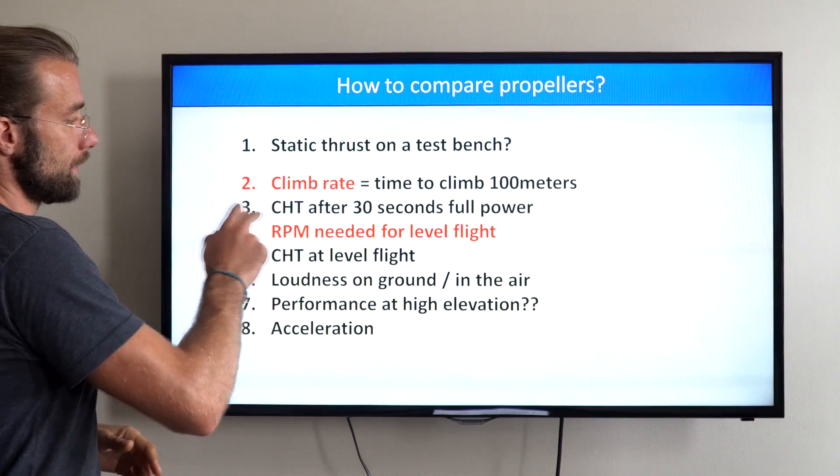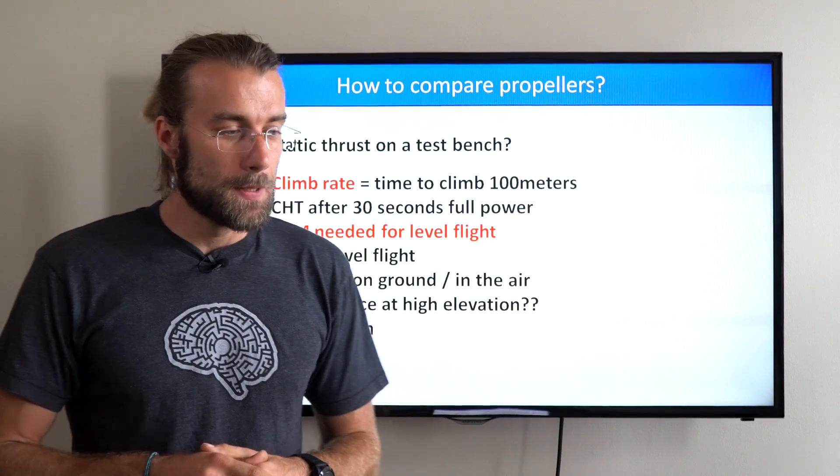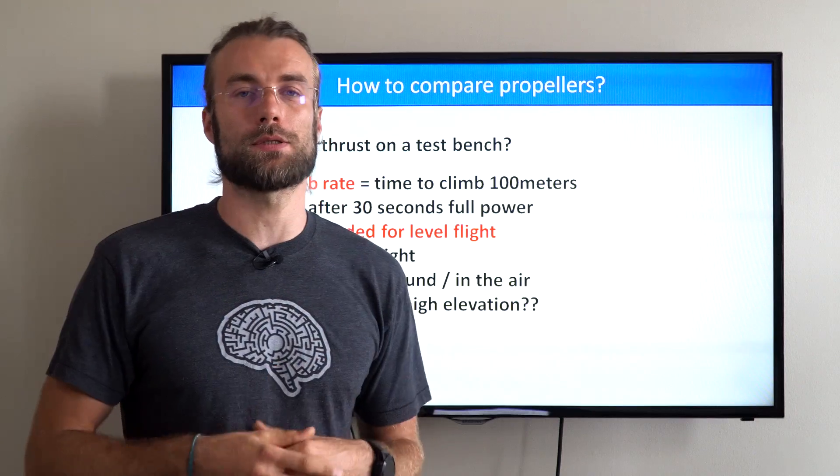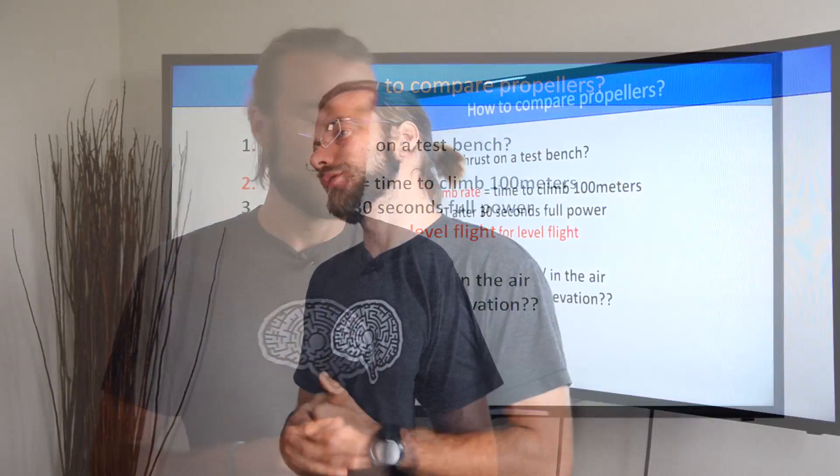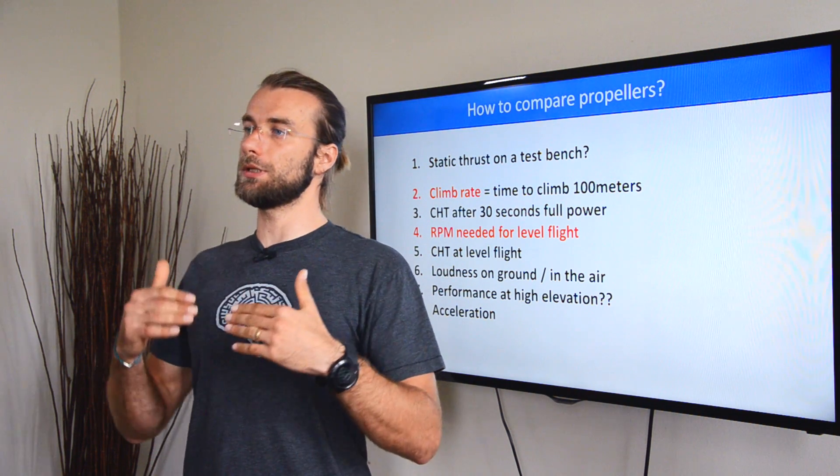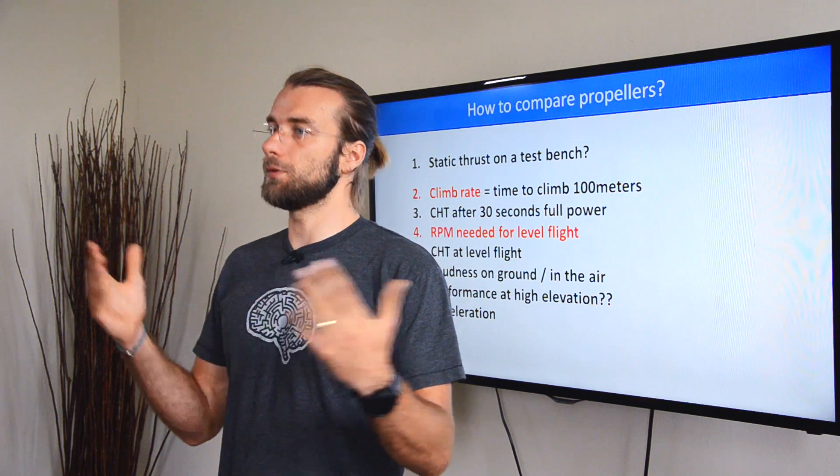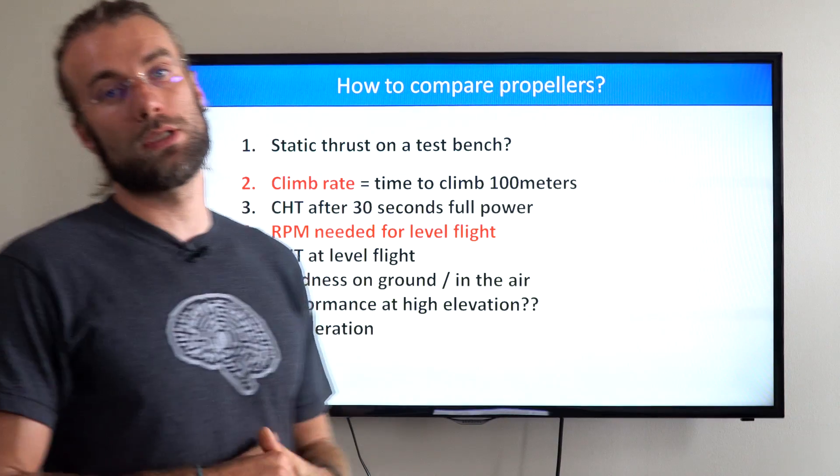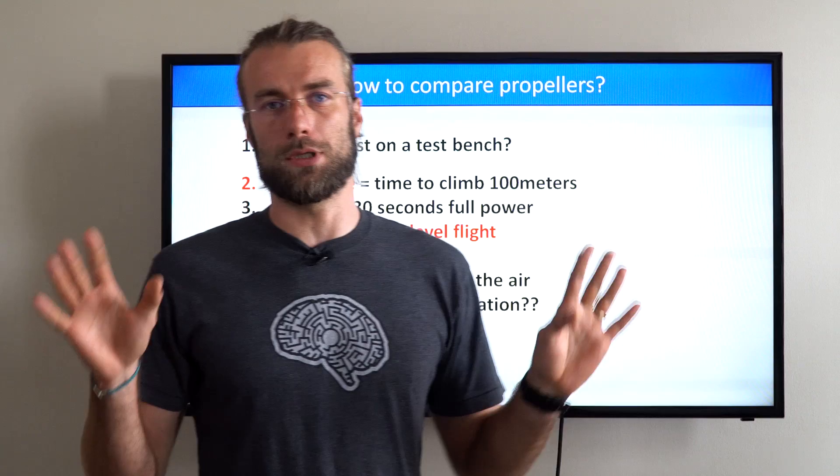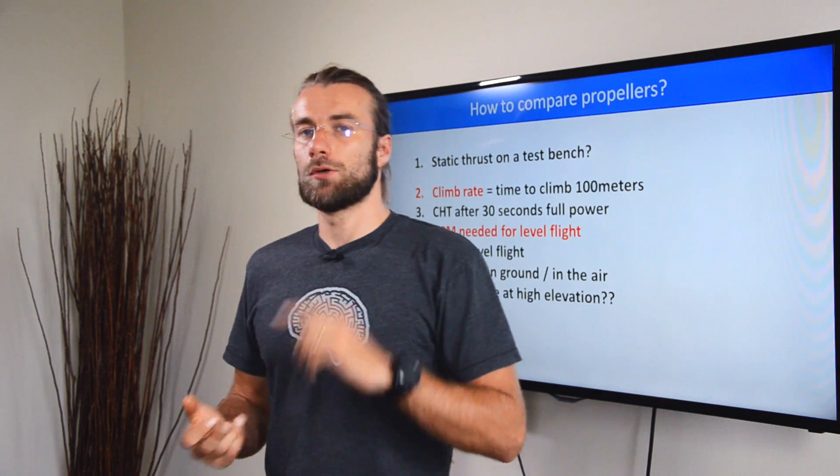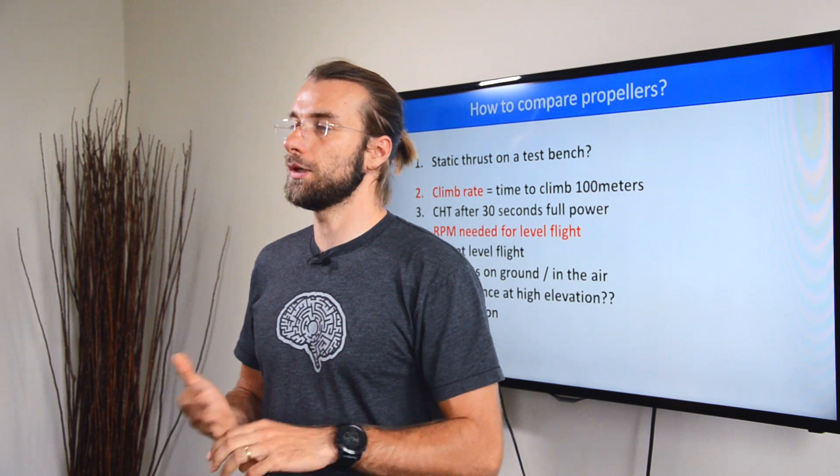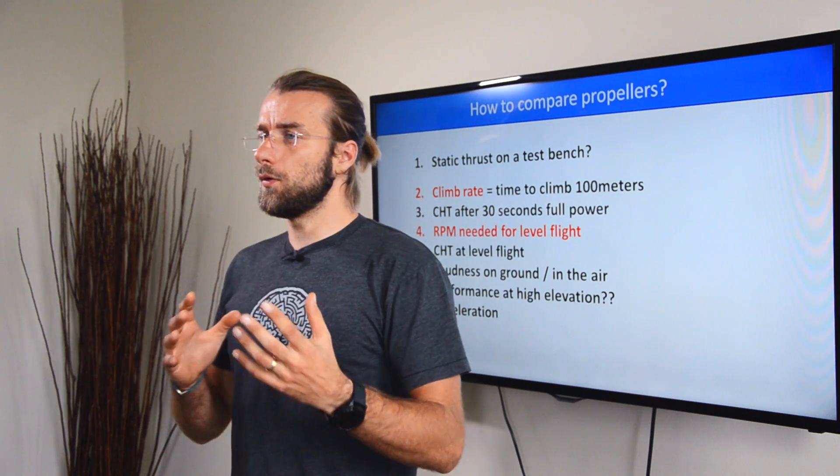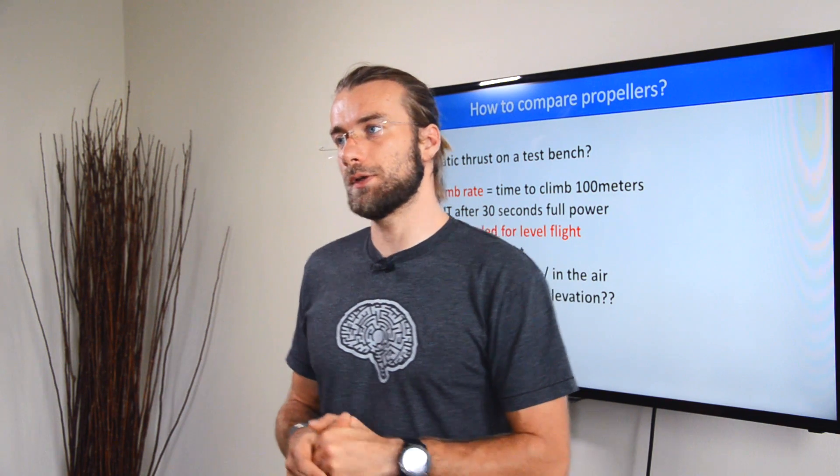The second thing that's crucial is the cylinder head temperature after a 30 second climb. Vittorazi Moster Plus is somewhat sensible to high temperatures. This is why most propellers have these cooling fins, and it's really crucial to have good cooling on the engine. The fourth characteristic you want to look at is the RPM needed for level flight, because this will determine your fuel consumption on your cross-country flights. The lower, obviously better. You want to check the cylinder head temperature on level flight as well, but this usually is not an issue. Regarding the climb rate, cooling at full power, cruising RPM and cruising temperature, all these three propellers, that is the Helix, the Scout and the E-Prop, they perform pretty much the same and I haven't noticed any major differences.